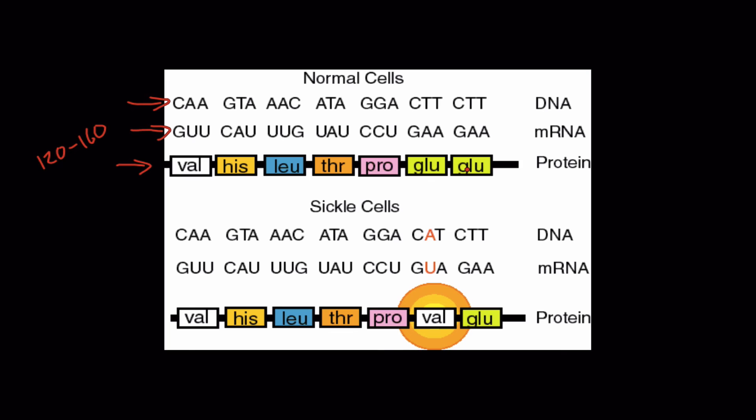And in sickle cell disease, which is the abnormal form, if you look at the code here, you can see the single mutation right here. Here we have a thymine in the DNA is replaced by an adenine. Adenine codes for uracil. The GUA codon codes for valine, not glutamine like it's supposed to be. So we end up with valine, a mistake, an inappropriate placement of valine here in the amino acid chain. And this single change to the primary structure of the protein causes what we call sickle cell disease.